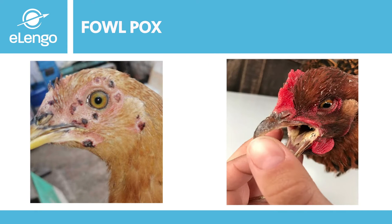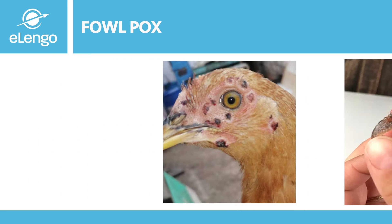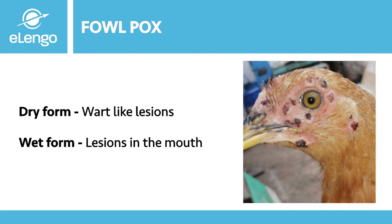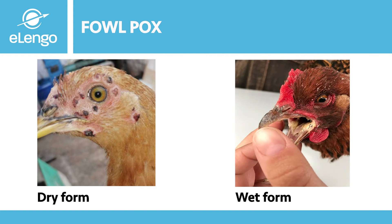The second disease we are going to look at is fowlpox. Fowlpox is also a viral disease of chicken that is characterized by lesions that form on the unfeathered parts of the body of the bird. We will also find lesions on the oral cavity and the trachea system. We have two forms of fowlpox: we have the dry pox and the wet pox. As we can see on our diagram, the striking difference between the two forms of the disease — the dry form, or cutaneous pox, is the most common form of fowlpox.